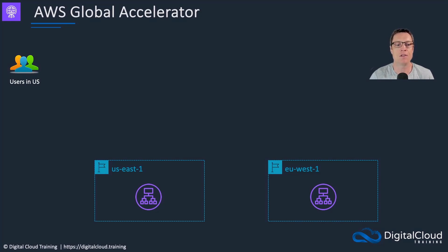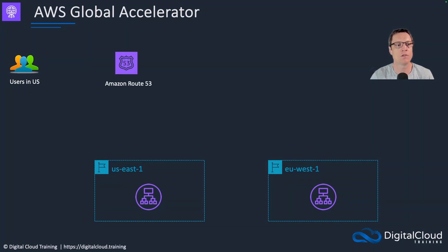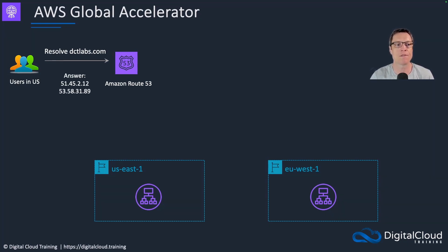Users in the US want to access this application, and we can assume the application is identical behind these two regions — they are here for high availability and redundancy. So users in the US speak to Amazon Route 53 to resolve what dctlabs.com's IP address is. Route 53 is the DNS service being used here, and it responds with two answers.